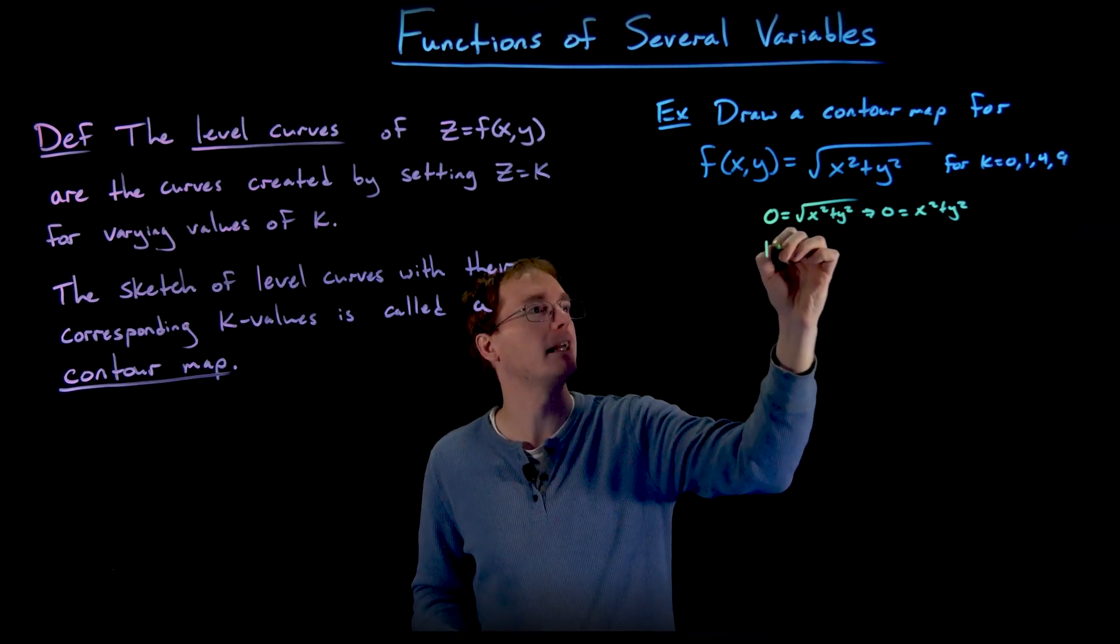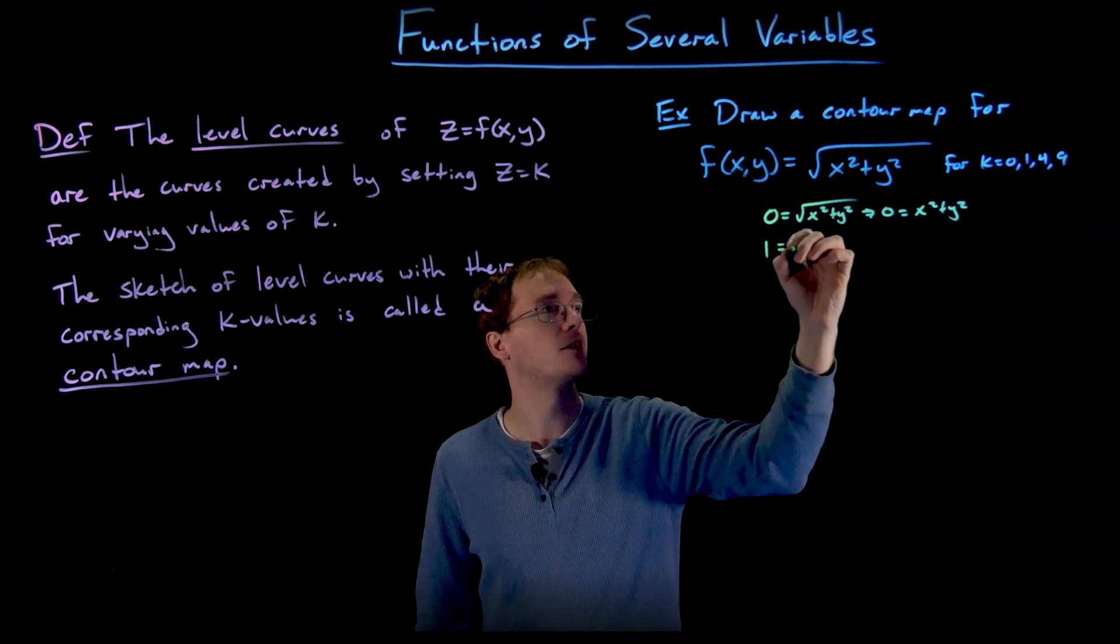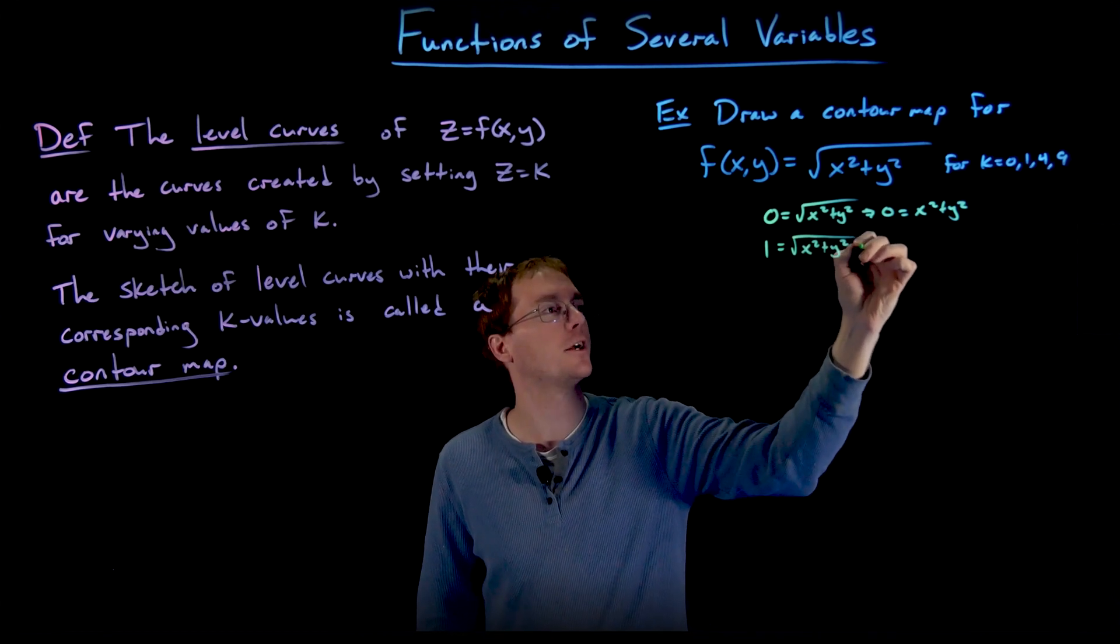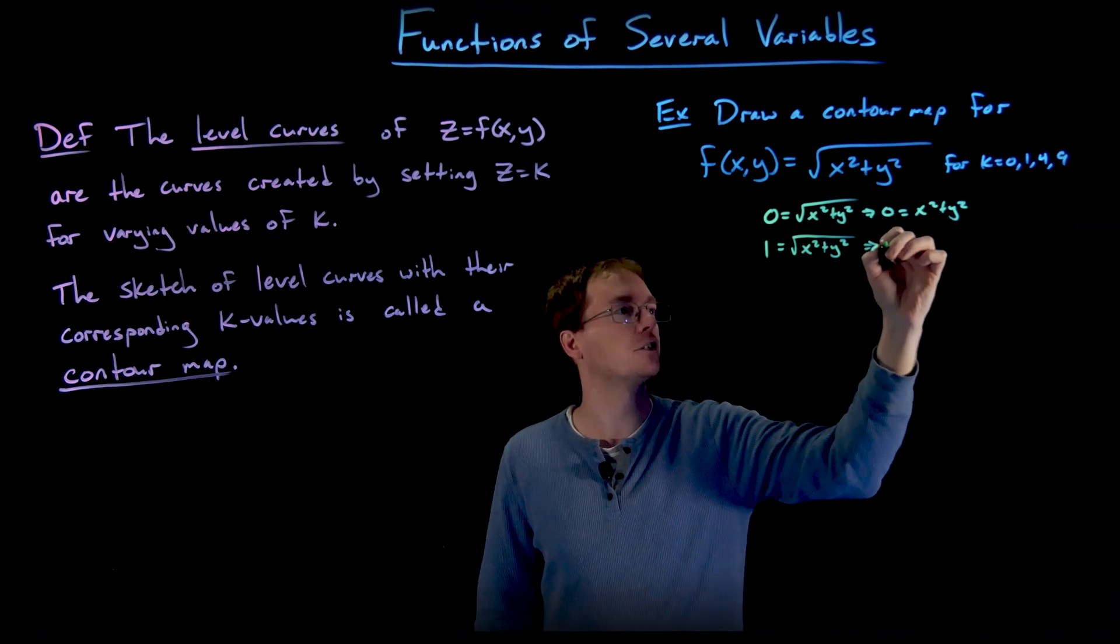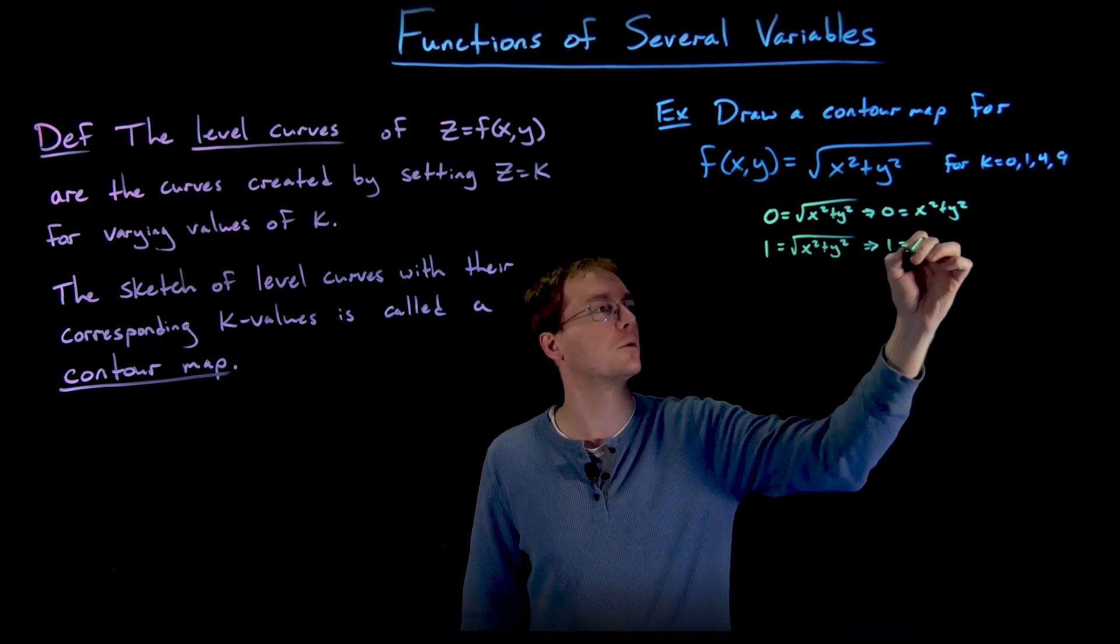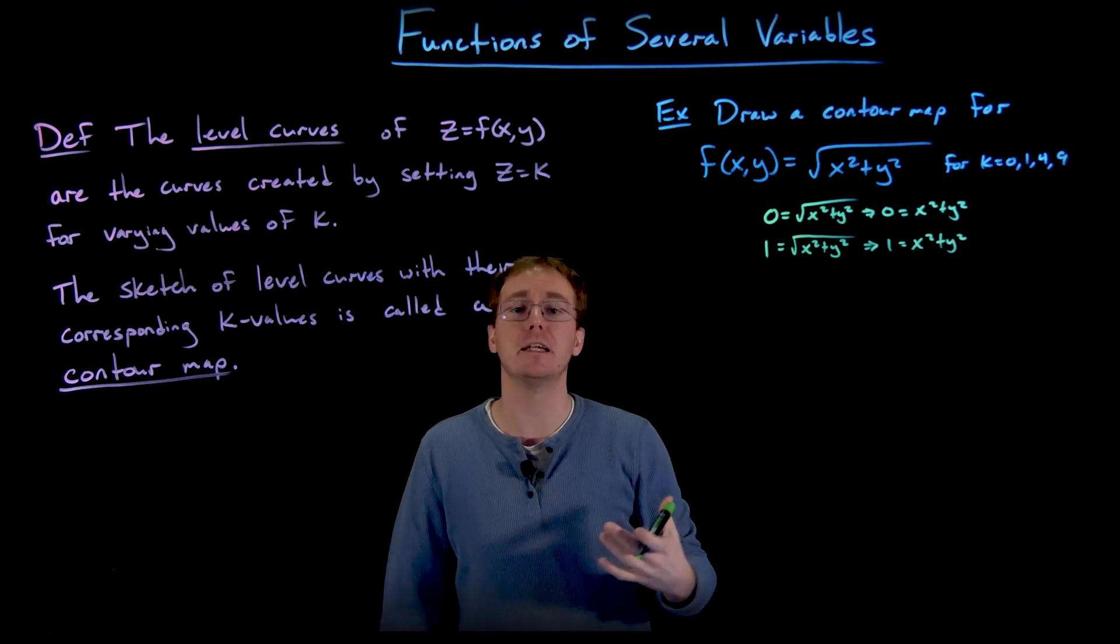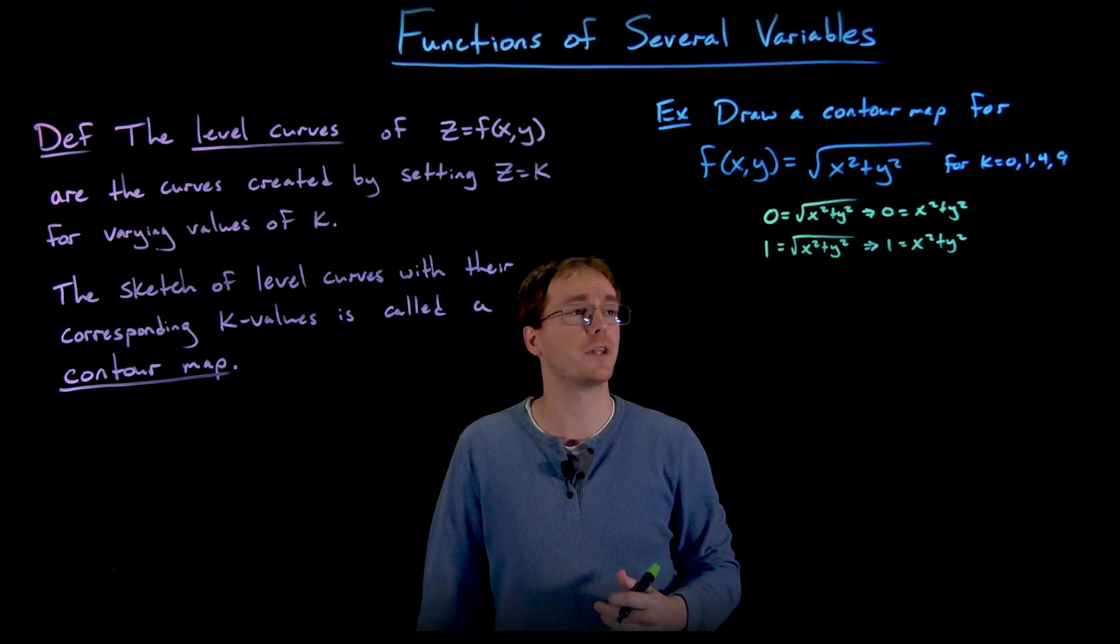So now what if we set k = 1? Then our function gets set equal to 1 and we get 1 = √(x² + y²). And if we rearrange this, we can write this as 1 = x² + y². We're just rearranging it by eliminating the radical through squaring both sides of the equation.